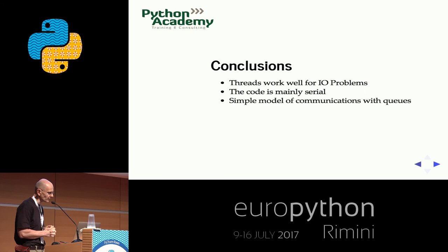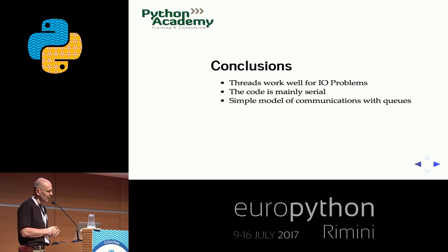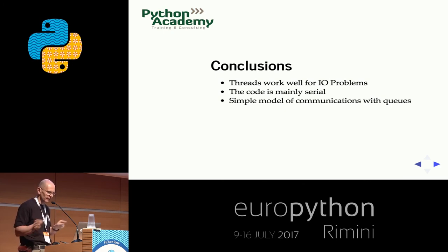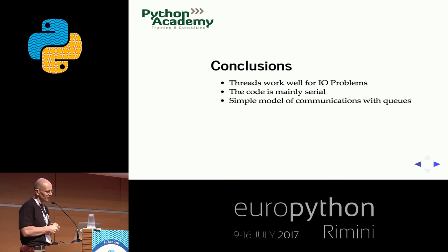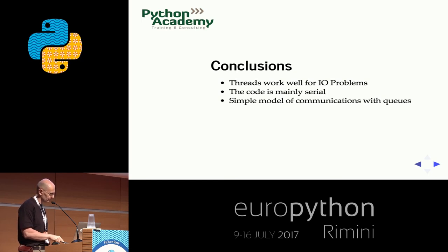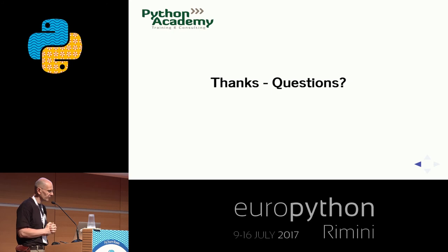Conclusions and take-home message: use threads whenever you have IO-bound problems. Most of the code looks like normal serial code — only a few places involve the queue. Try to isolate thread-related code in separate methods whenever possible. And whenever possible, use queues for communication, which is much simpler than shared data structures.